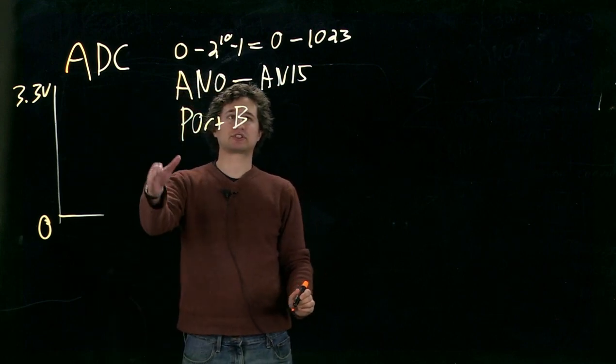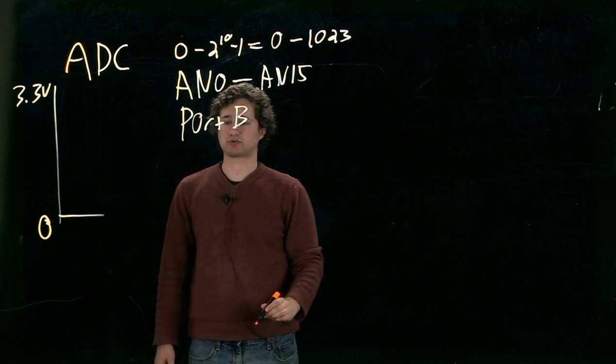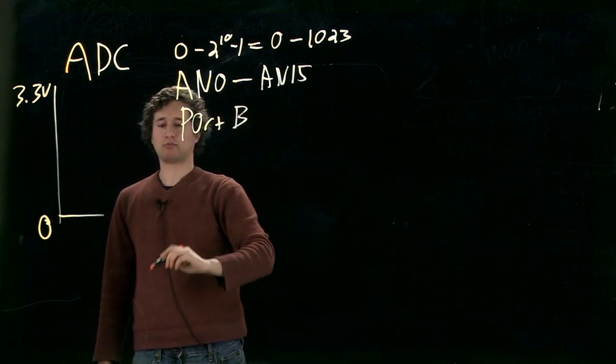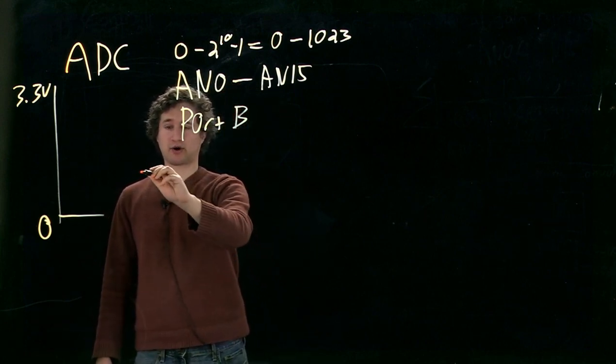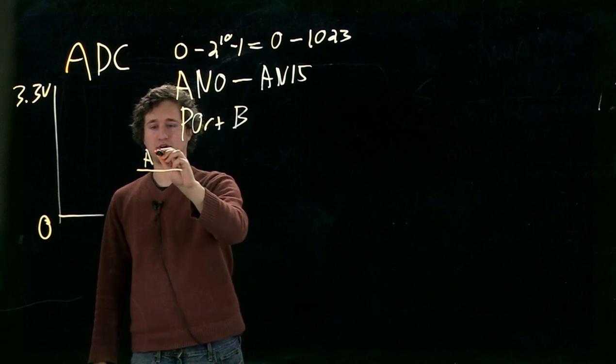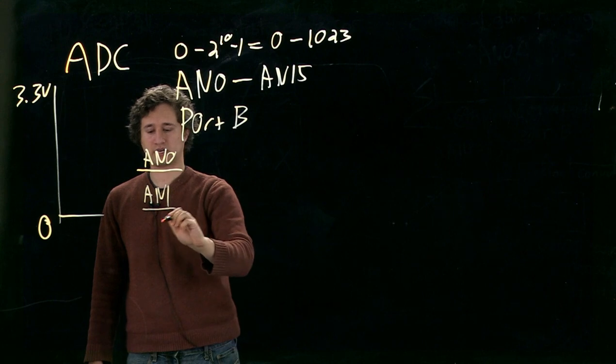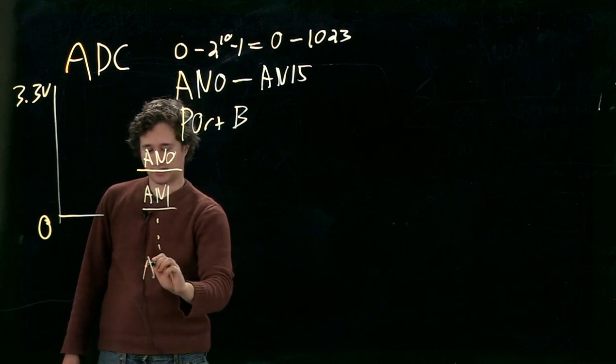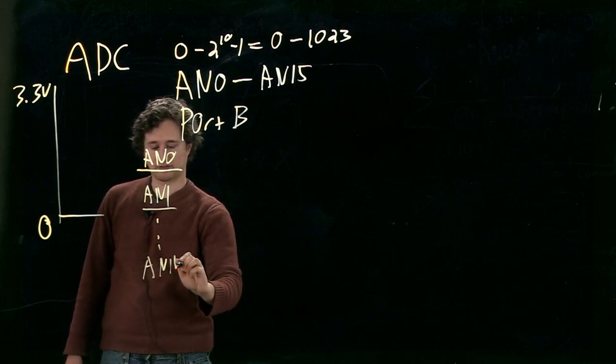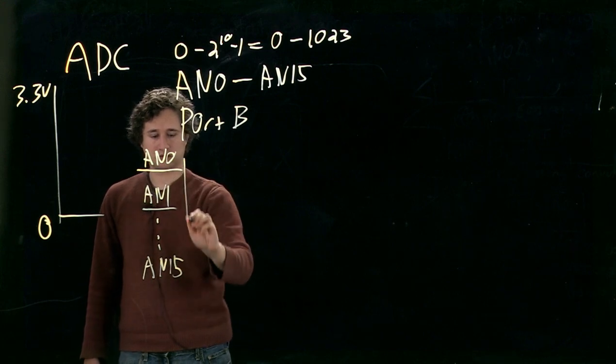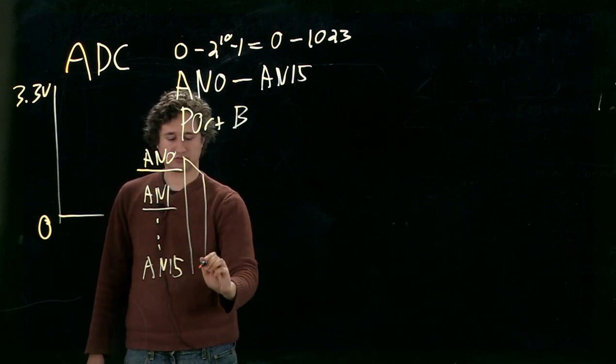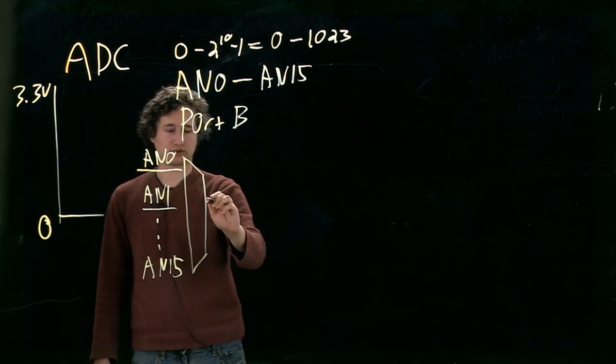Now, if we have 16 pins but only one device, how does this work? This is a simplified diagram of this. Each pin here, AN0, AN1, all the way down to AN15 go into a device called a multiplexer.